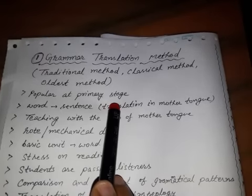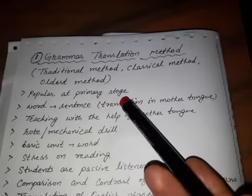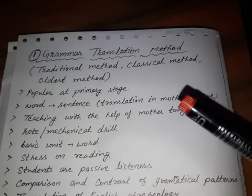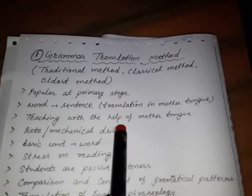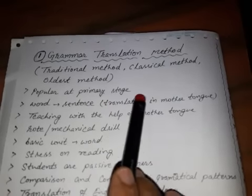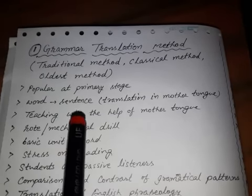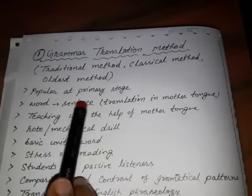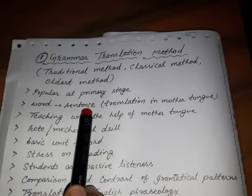The most popular method in English teaching proceeds from word to sentence. The basic unit is the word, and from the word we go to the sentence. This means word translation will be done, and words will be explained in the mother tongue.